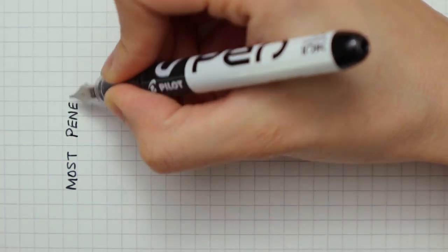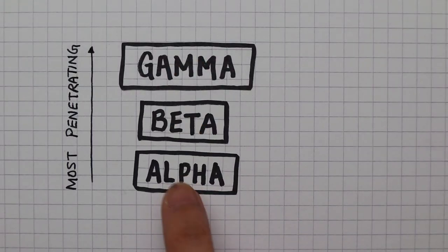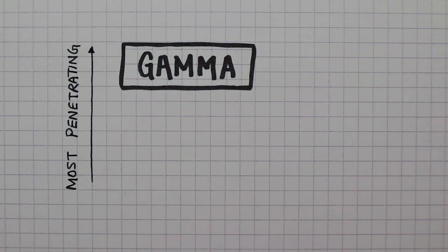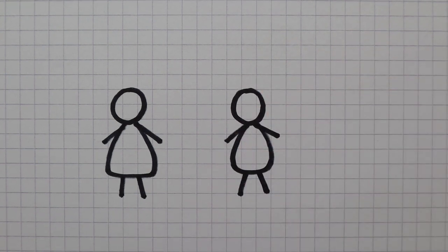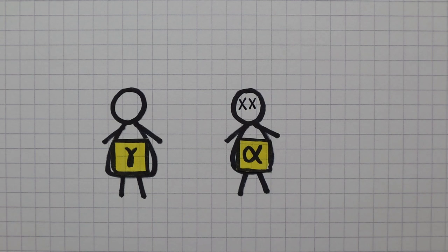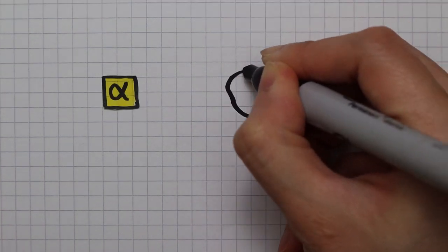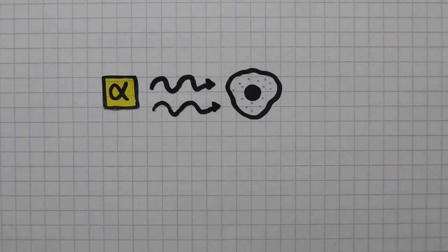Putting the three sources in the order of how penetrating they are, gamma is the most penetrating. Since gamma has the highest penetrating power, it is less dangerous to have inside of the body compared to alpha. That's because gamma can penetrate and leave your body quickly, whereas alpha radiation stays inside of your body and it continues to ionize your cells.